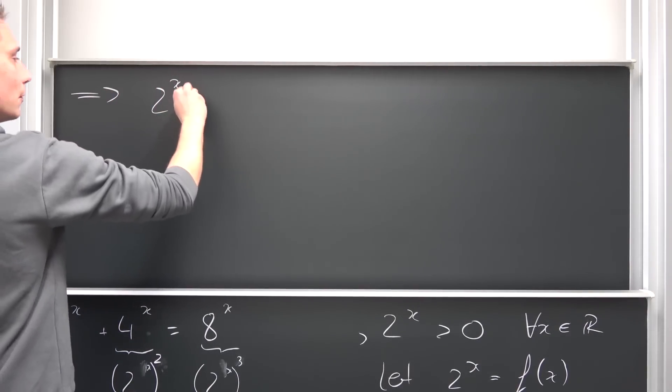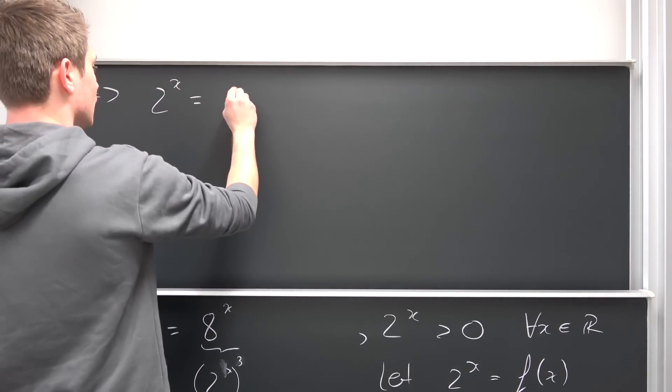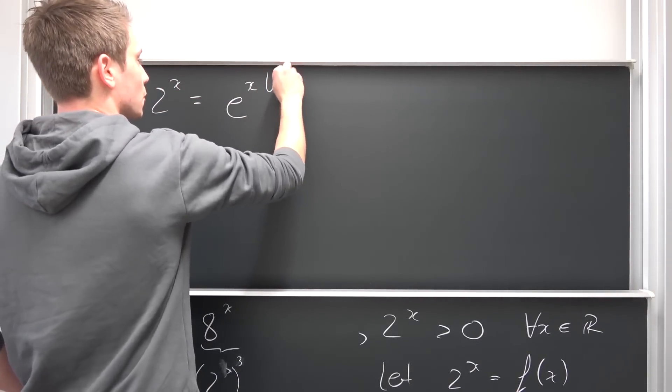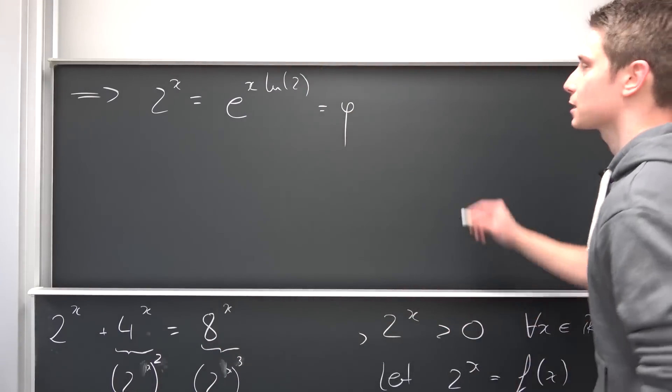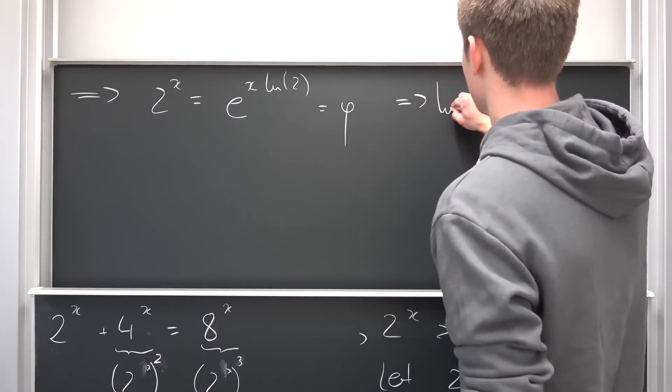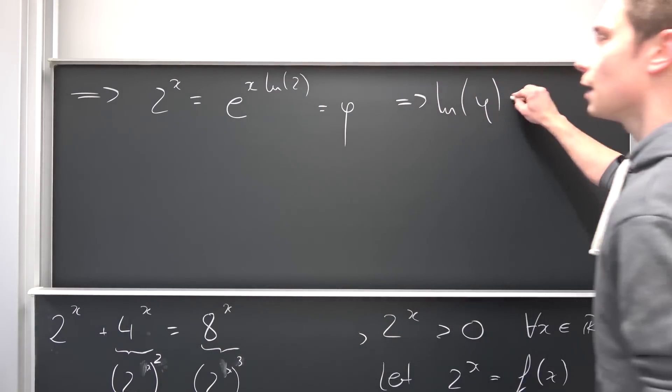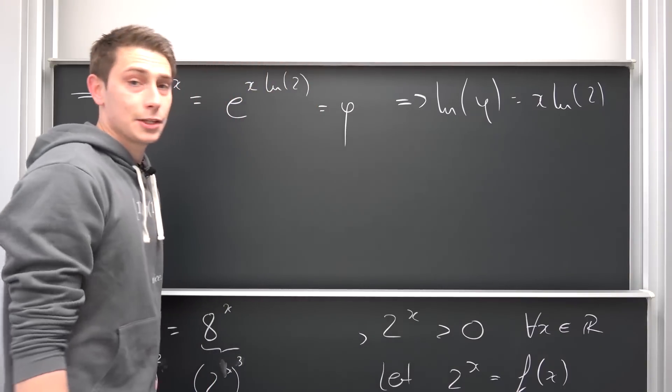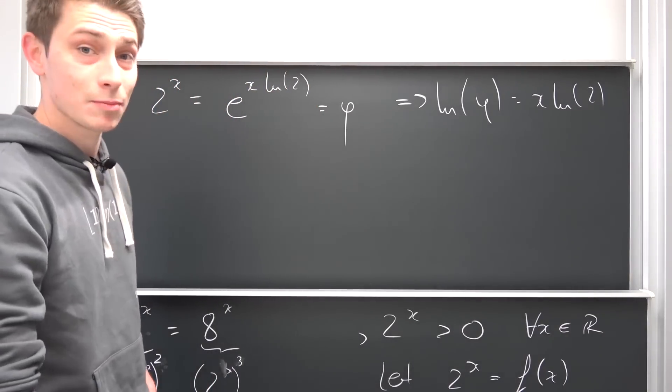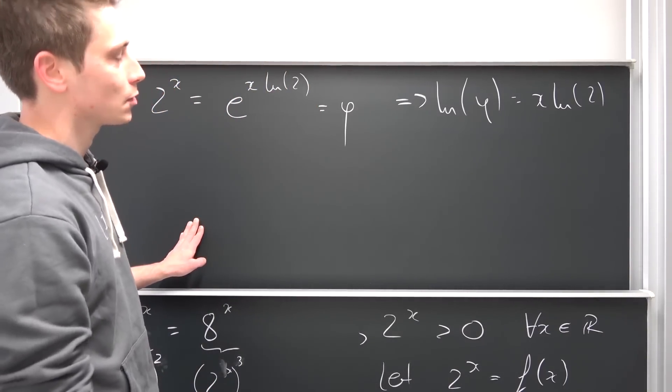Meaning 2 to the x power is nothing other than e to the x times natural log of 2 being equal to phi, and now we can simply apply the natural log on both sides to arrive at the natural log of phi being equal to x times the natural log of 2.